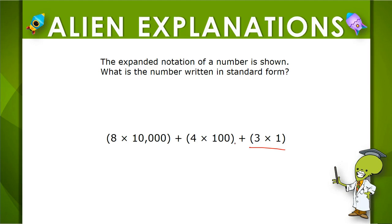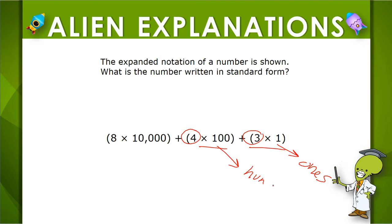We can look at each of these as they represent different place values. This means we have a 3 in the ones place. This means we have a 4 in the hundreds place. So we can look at each value that way.